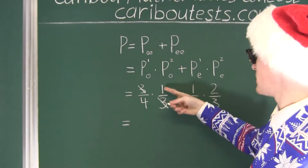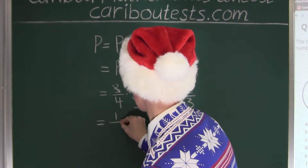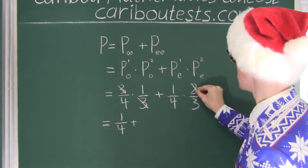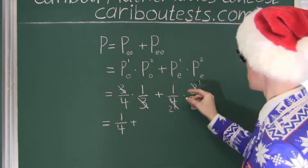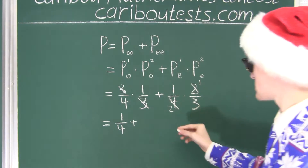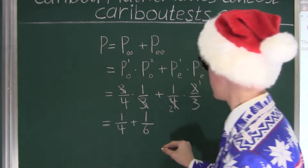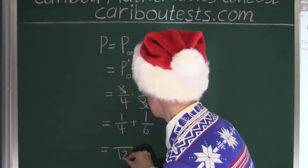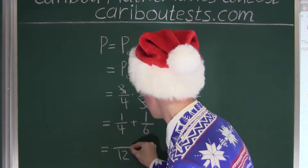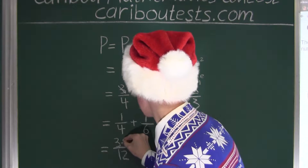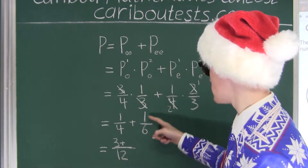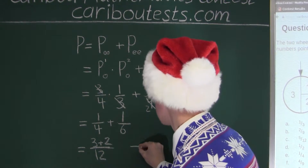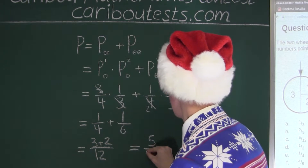Here the three and the three cancel out, so it would be one over four. Plus — here the two and the four would simplify to one over two times three, which is six. Now if we add both of these fractions, the common denominator would be twelve. Twelve divided by four is three, so three times one is three. And twelve divided by six is two, so two times one is two. So we have three plus two over twelve, which equals five over twelve.